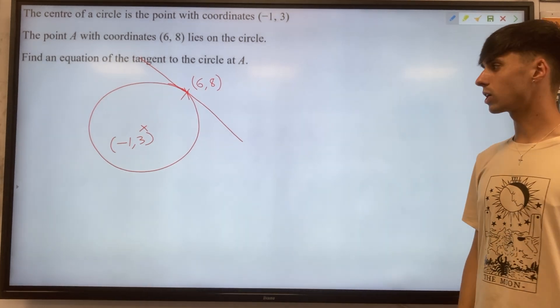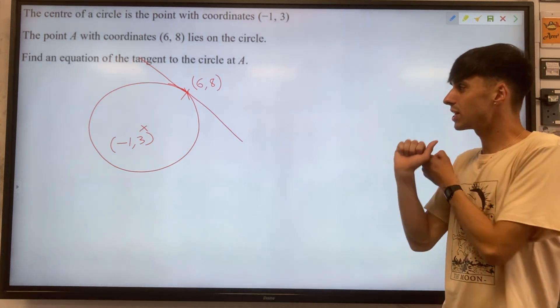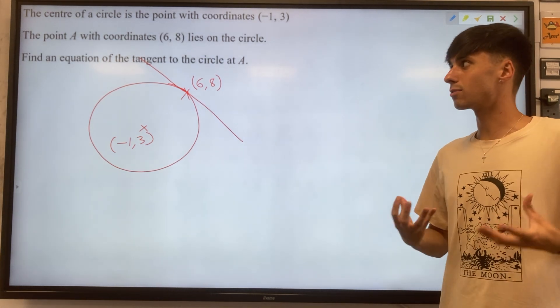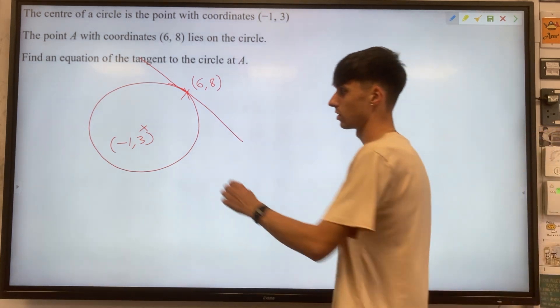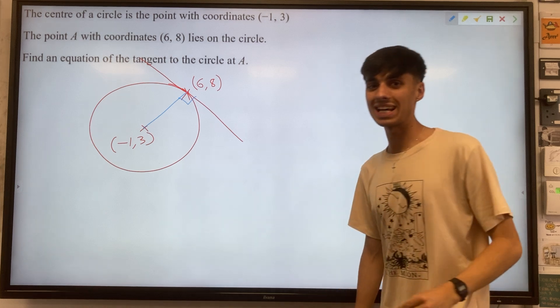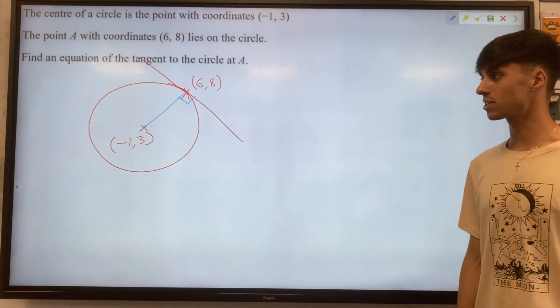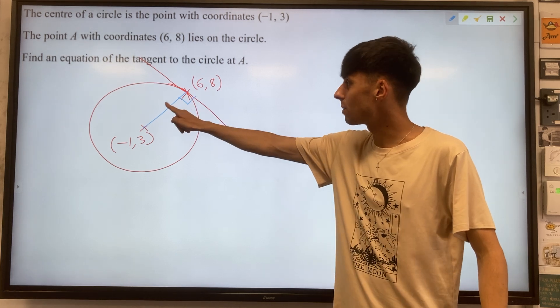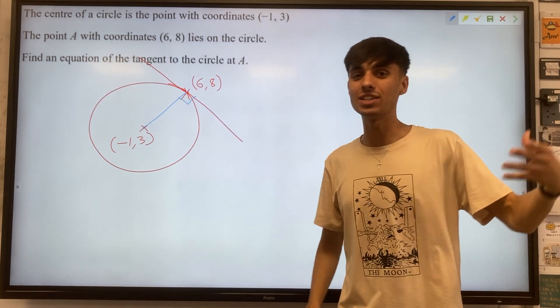At that point we're pretty much good to go with this problem. So things we can do. When you see this question, anytime you've got a tangent, be thinking about that relevant circle theorem for us. So in this case it's the one where a radius meets a tangent at 90 degrees.